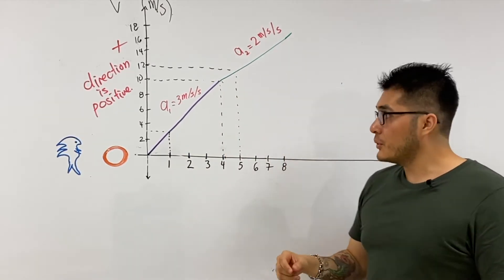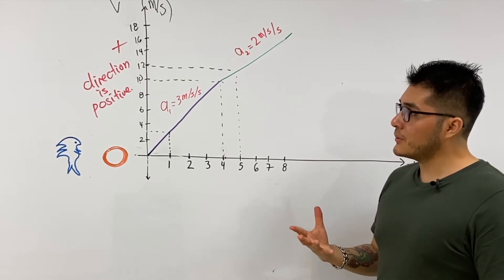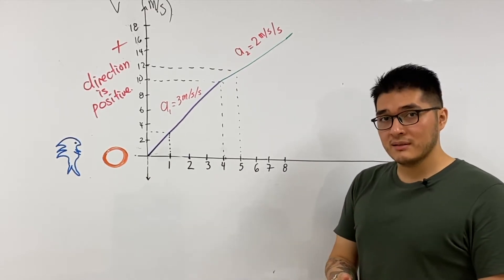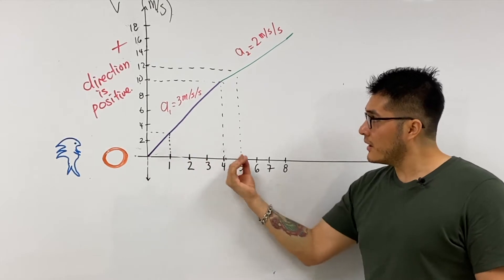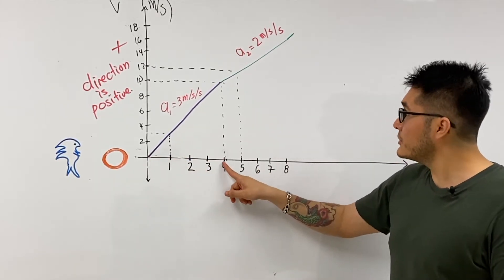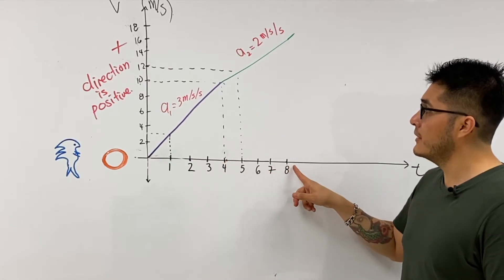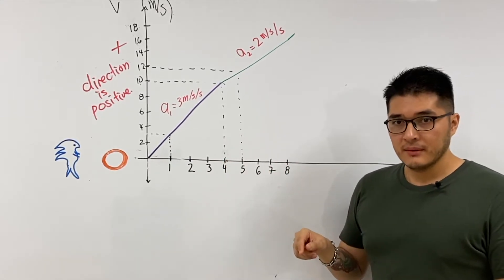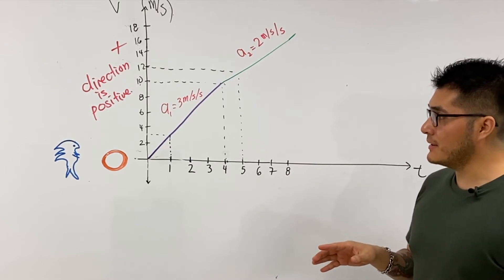First his velocity is changing this quickly, then his velocity is changing that quickly. So now we have a pretty good idea of everything that's going on with Sonic, but we don't know how much distance he's actually covered in each time interval. We're going to break this down into between zero and four seconds and from four seconds to eight seconds.